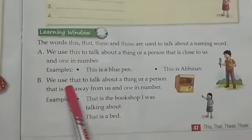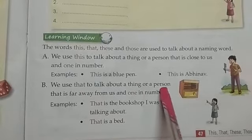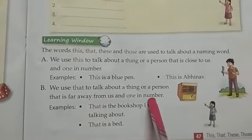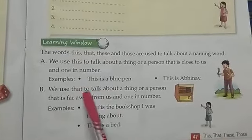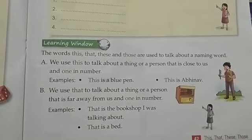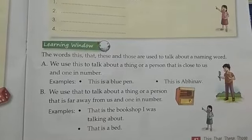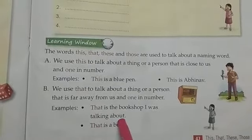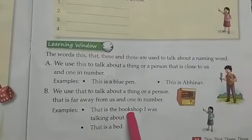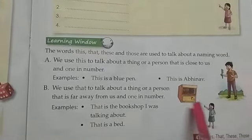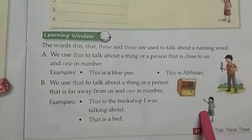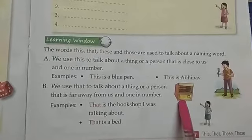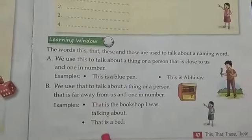Number B: We use 'that' to talk about a thing or a person that is far away from us and one in number. The word 'that' is used when a thing or person is far away from us and the number is one. For example: That is the book shop I was talking about. We are talking about the book shop which is very far from this girl, so we have used the word 'that' and the shop is one in number.